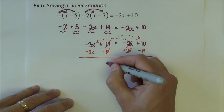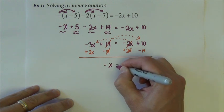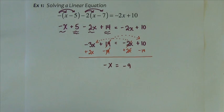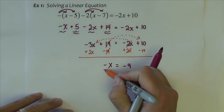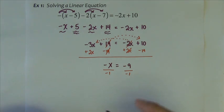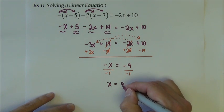And so we now have, on this side combining like terms, a negative x equals, on this side, a negative 9. Of course that negative x has a coefficient of negative 1, so we divide by negative 1, and we get x equals 9.